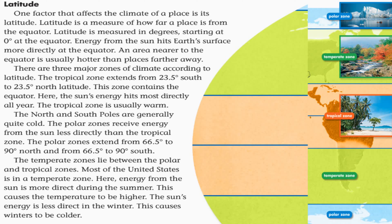There are three major zones of climate according to latitude. The tropical zone extends from 23.5 degrees south to 23.5 degrees north latitude — this zone contains the equator, where the sun's energy hits most directly all year, making it usually warm. The polar zones are generally quite cold and receive energy from the sun less directly than the tropical zone. The polar zones extend from 66.5 degrees to the poles.